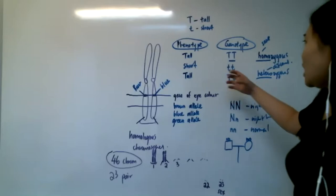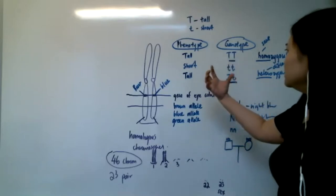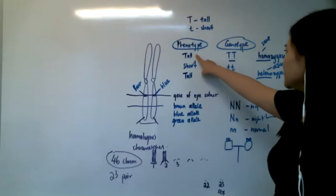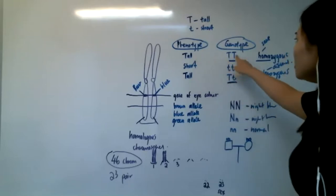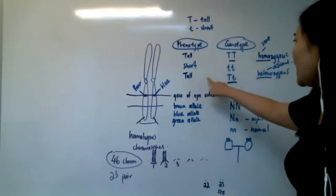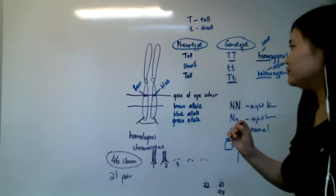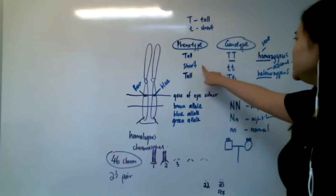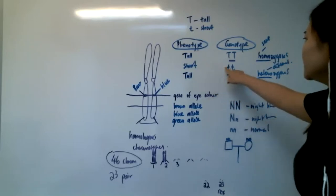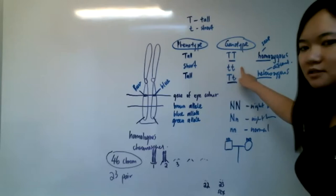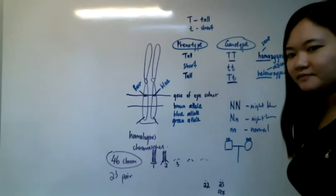And then our dominant allele tends to express itself under homozygous condition and heterozygous condition. Recessive allele only expresses itself under homozygous condition. Okay. Let's proceed.